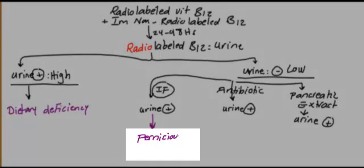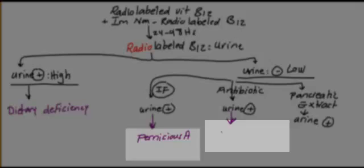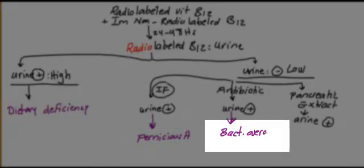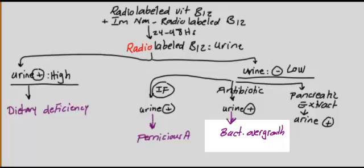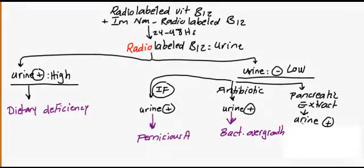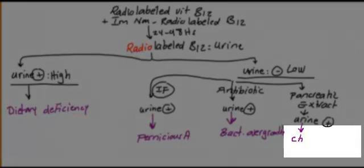And what is the disease which is corrected? Usually the disease causes vitamin B12 deficiency but is corrected by giving antibiotics. We call this bacterial overgrowth. Usually there are bacteria, and bacteria are killed by antibiotics, so there is no further problem with vitamin B12. And if you give pancreatic extract, that's when you have a problem with the pancreas. So we call this chronic pancreatitis.